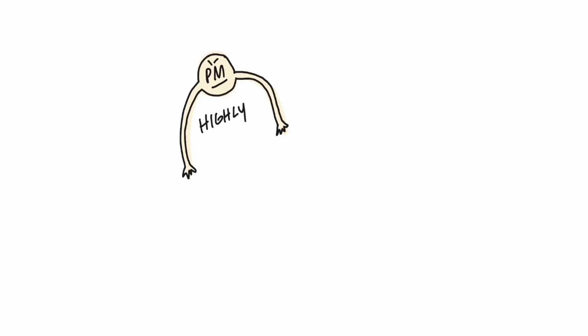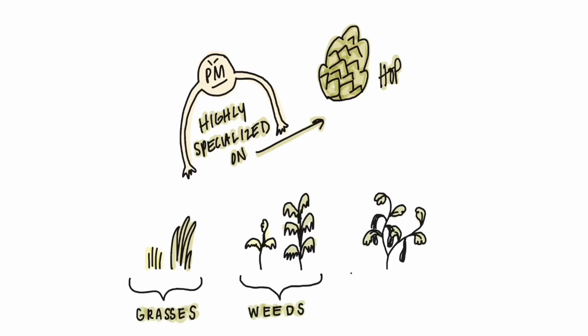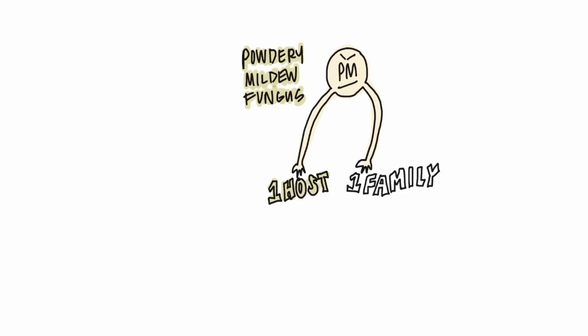The powdery mildew fungus is highly specialized on hop. Many plants develop powdery mildew diseases such as grasses, weeds, and other crops. Fortunately, a specific powdery mildew fungus usually attacks only one plant host or one plant family. In our example, hop and the weedy relative, Japanese hop, are the primary known hosts.